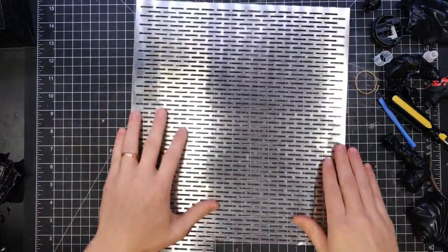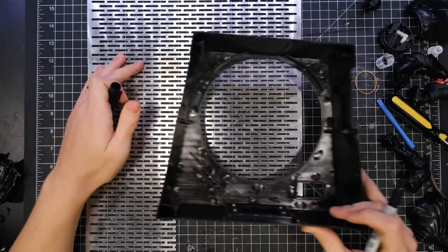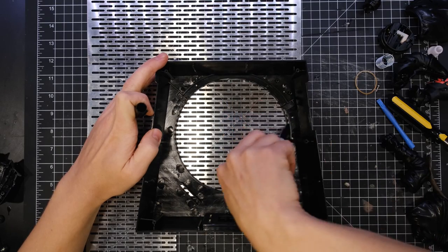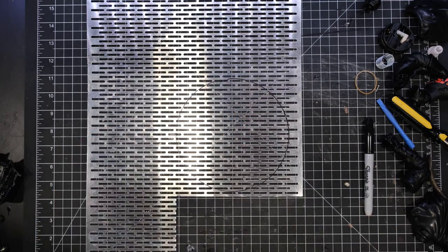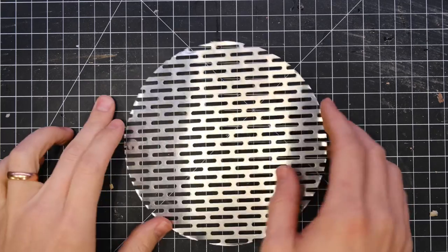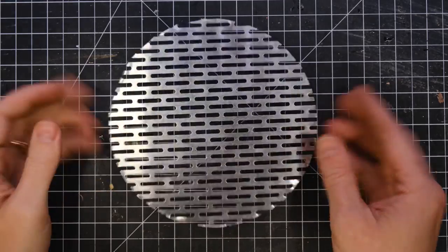I found this metal sheet at Hobby Lobby. It's the only place that I know that sells it, but it has this very imperial-looking design on it. I traced a circle the same size as the hole on the base. Then I used some tin snips to cut that into an almost perfect circle.